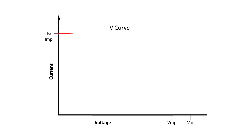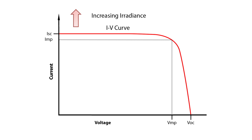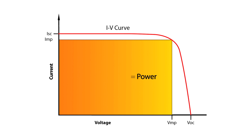The IV curve of a string of PV modules represents all the current and voltage values at which the string could be operated, or loaded, at the existing irradiance and temperature conditions. The IV curve for a properly operating string is shown here. The height of the plateau varies with irradiance. The open circuit voltage, where current drops to zero, varies with cell temperature. Power is the product of current and voltage, thus maximum power is achieved at the knee of the IV curve.